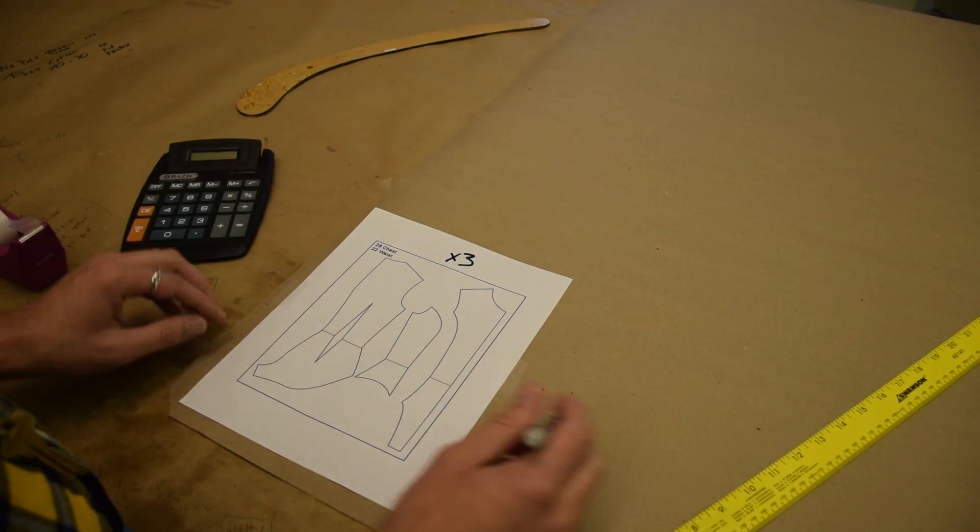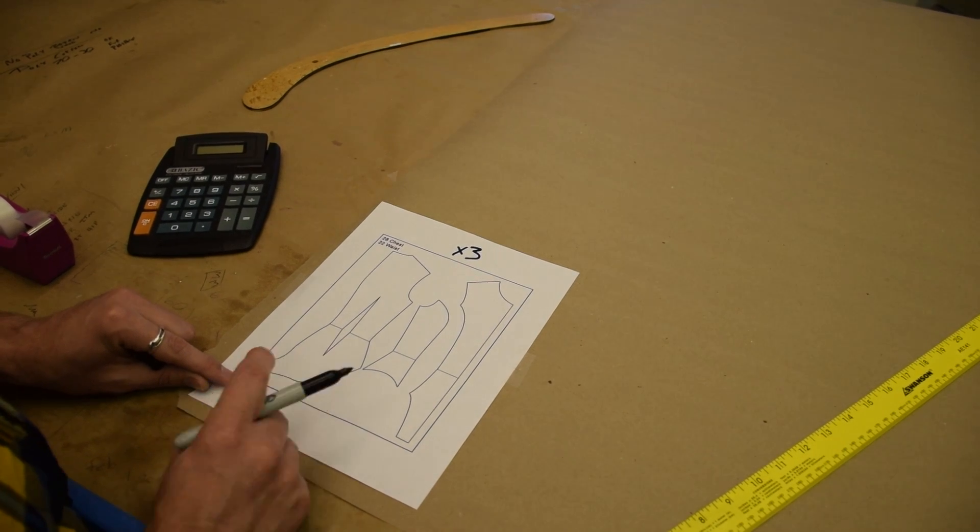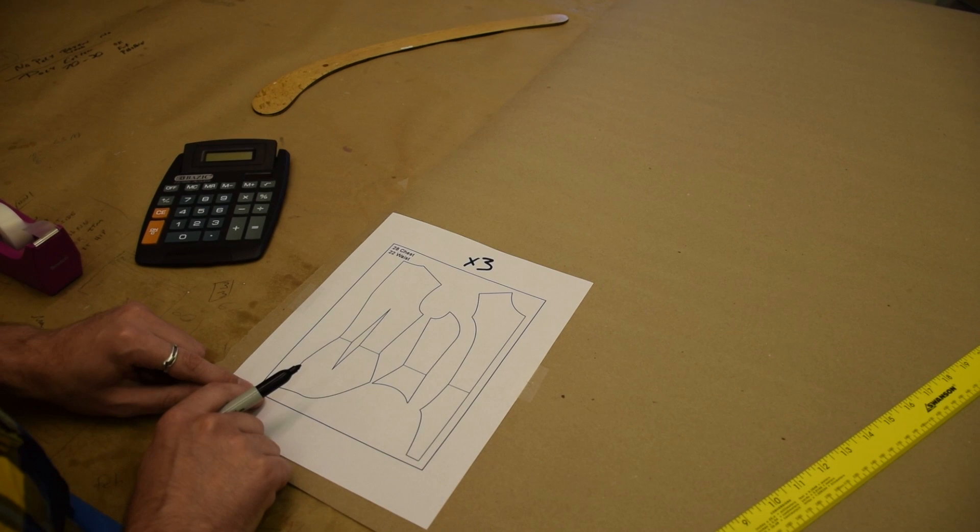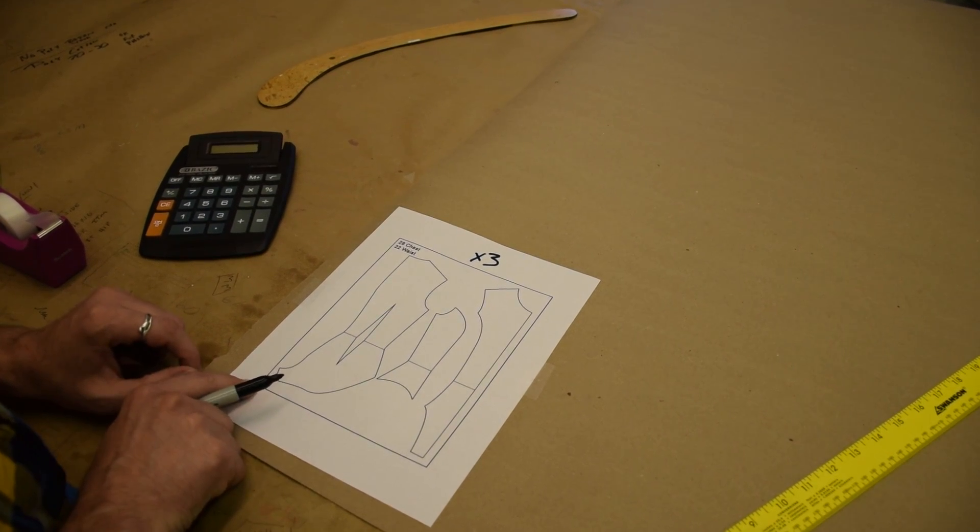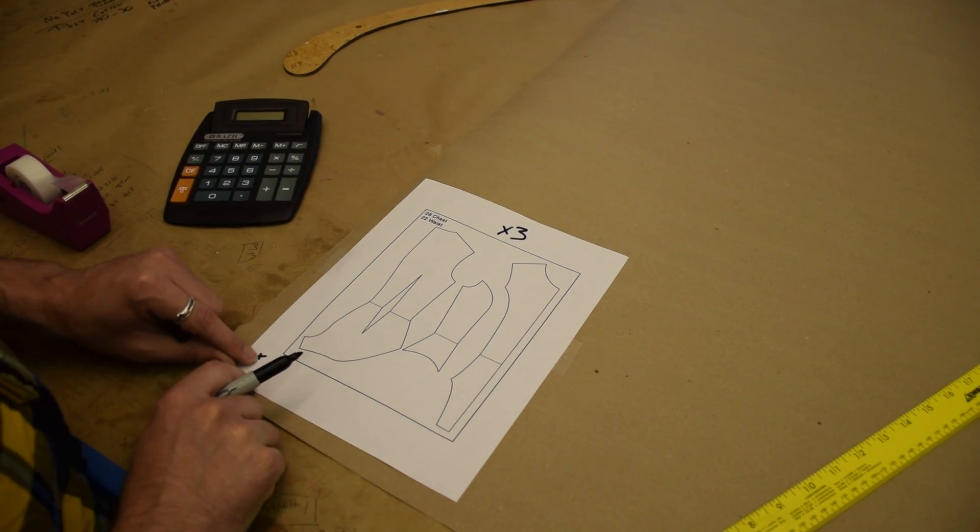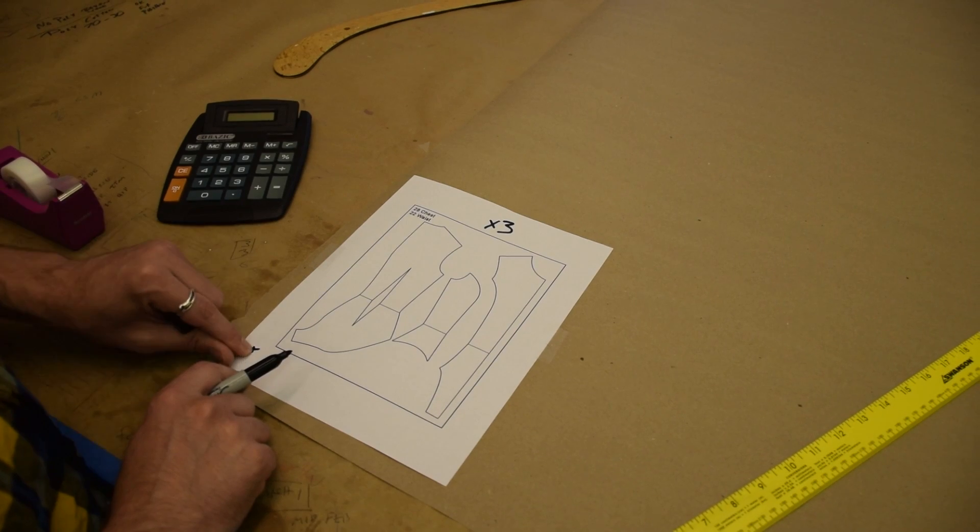And then the next thing you've got to do is just give yourself a zero, a starting point, anywhere that's on the bottom left of your image. So you could use this corner, or you could just put an X somewhere, and that's where all of our measurements are going to start from. So every measurement is going to start from this X.